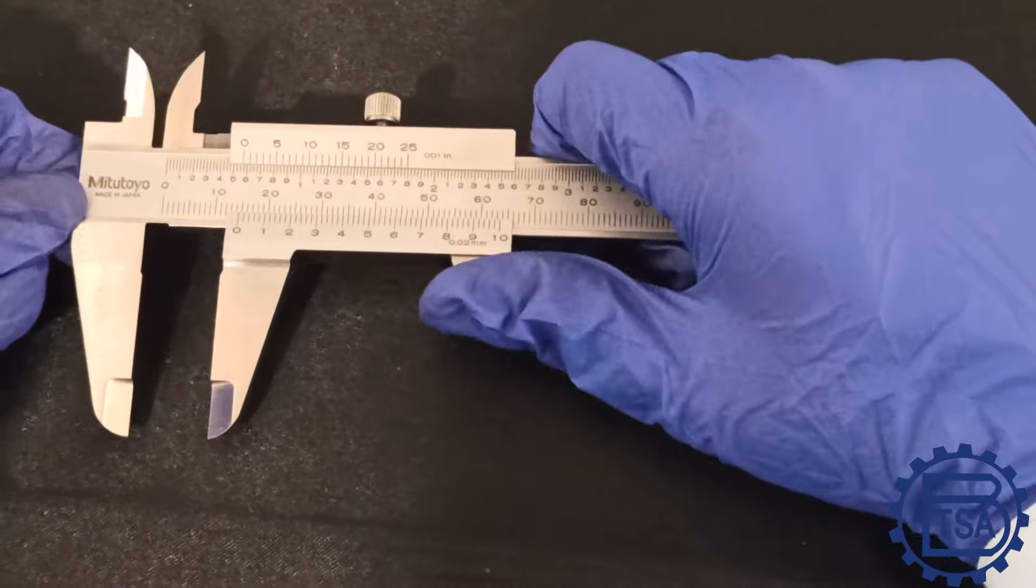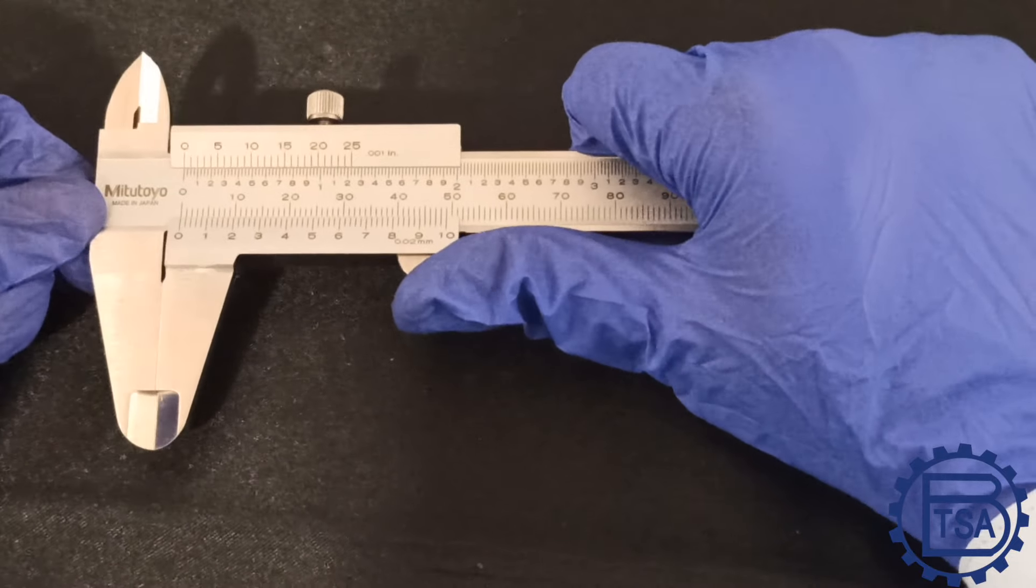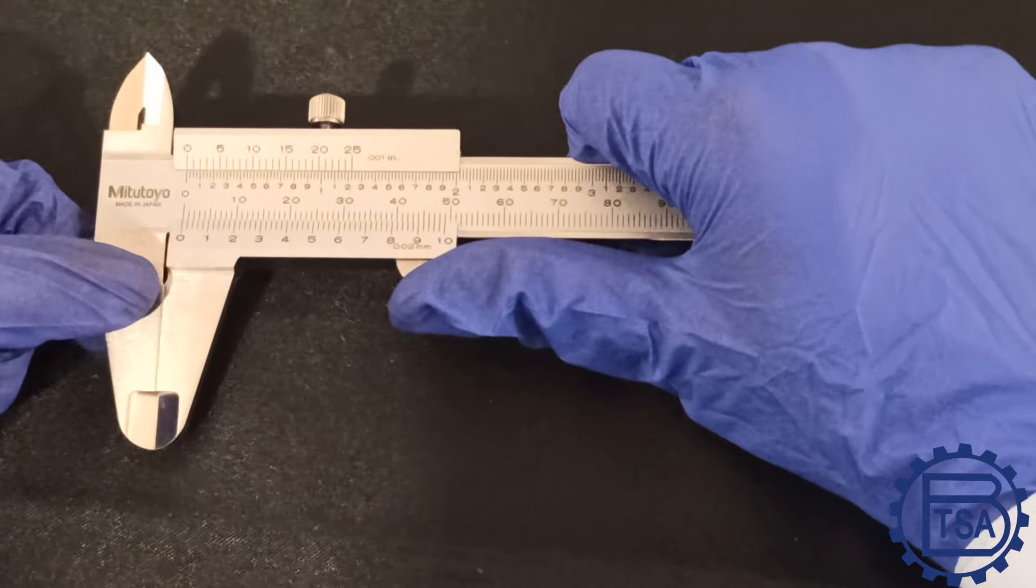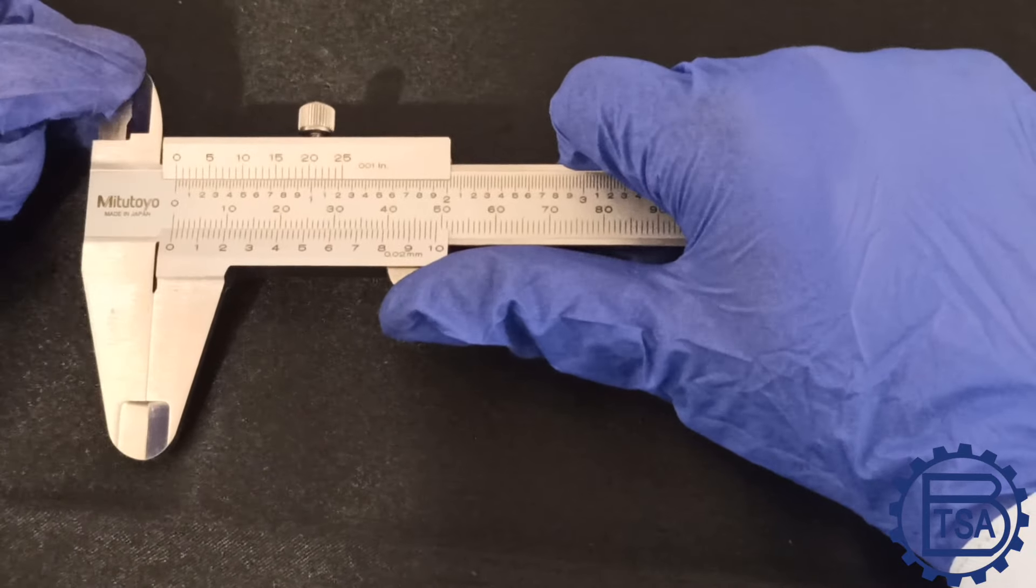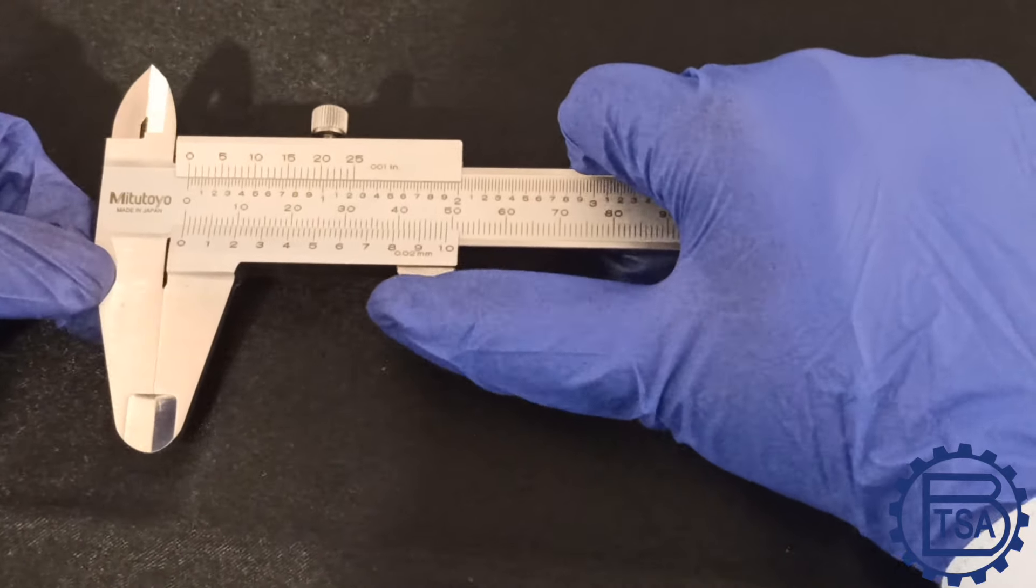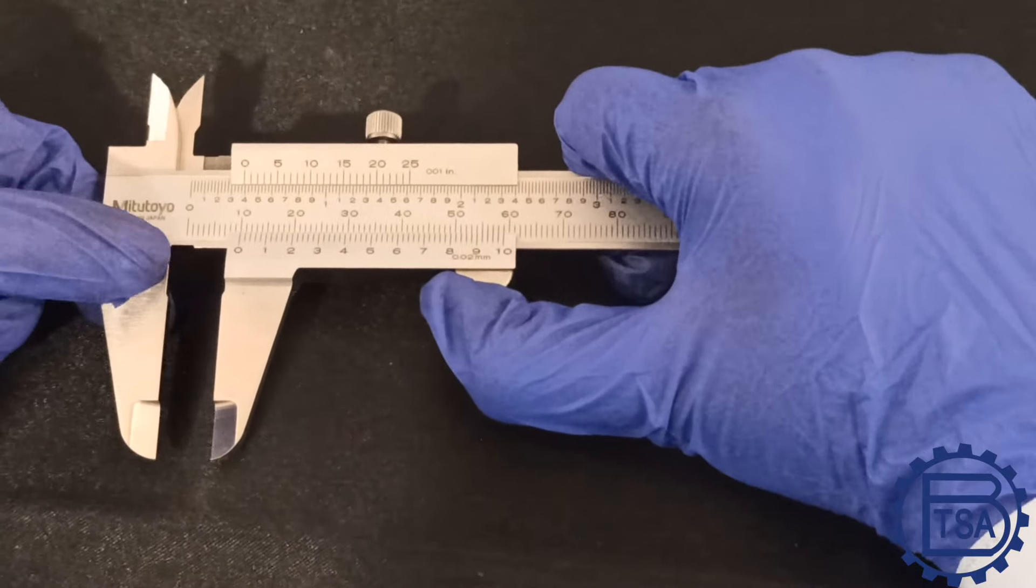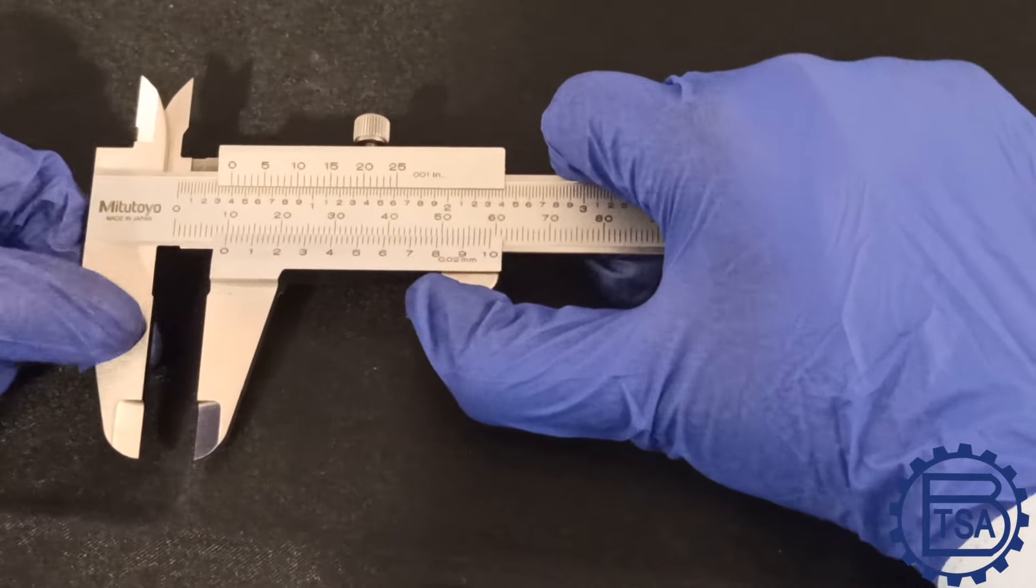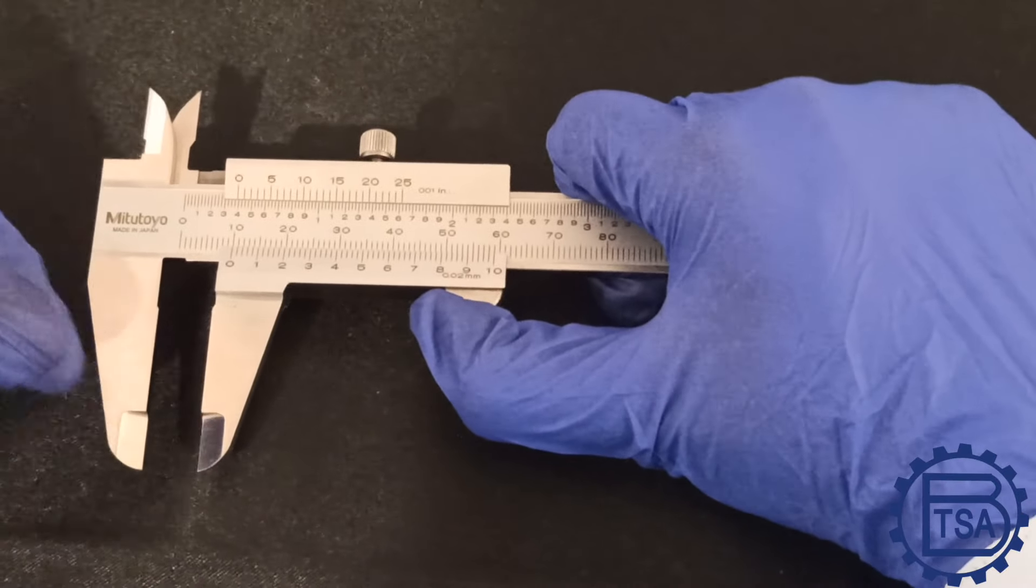Initially, we are going to check the zero measurement. When we close our jaws, we can see some gap. This is not the place to measure. The closed portion is the jaw area where we should measure. There are basically three things in the jaws of the caliper: the inside groove area, machined area, and the edge of the jaws.